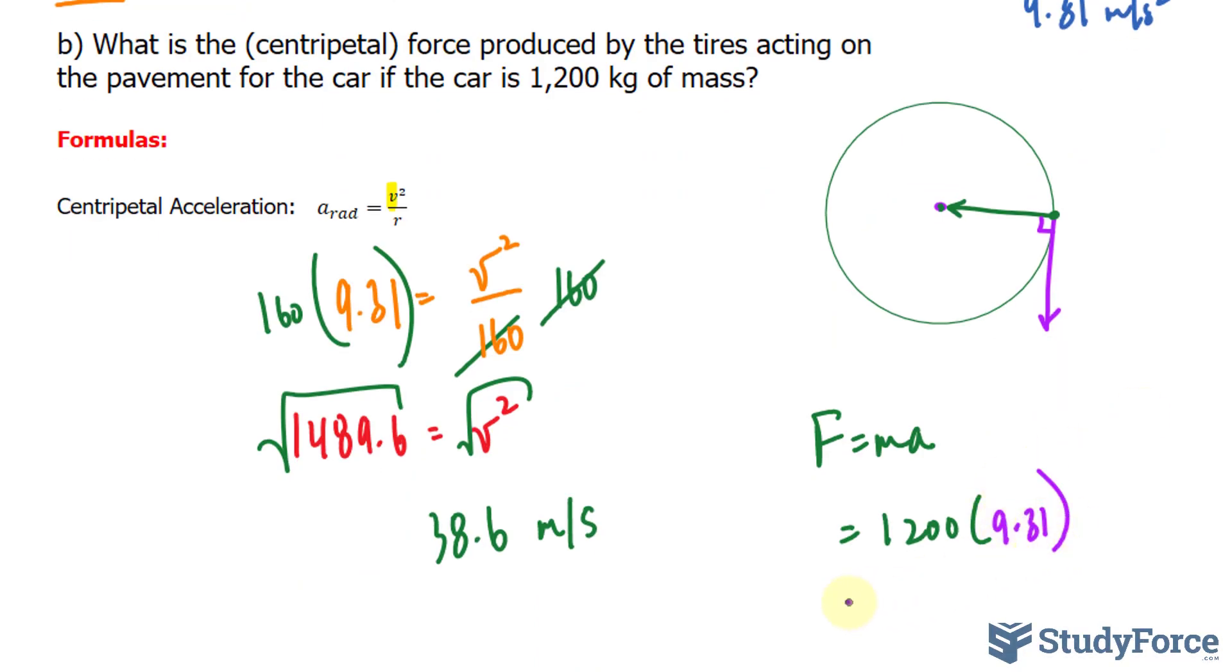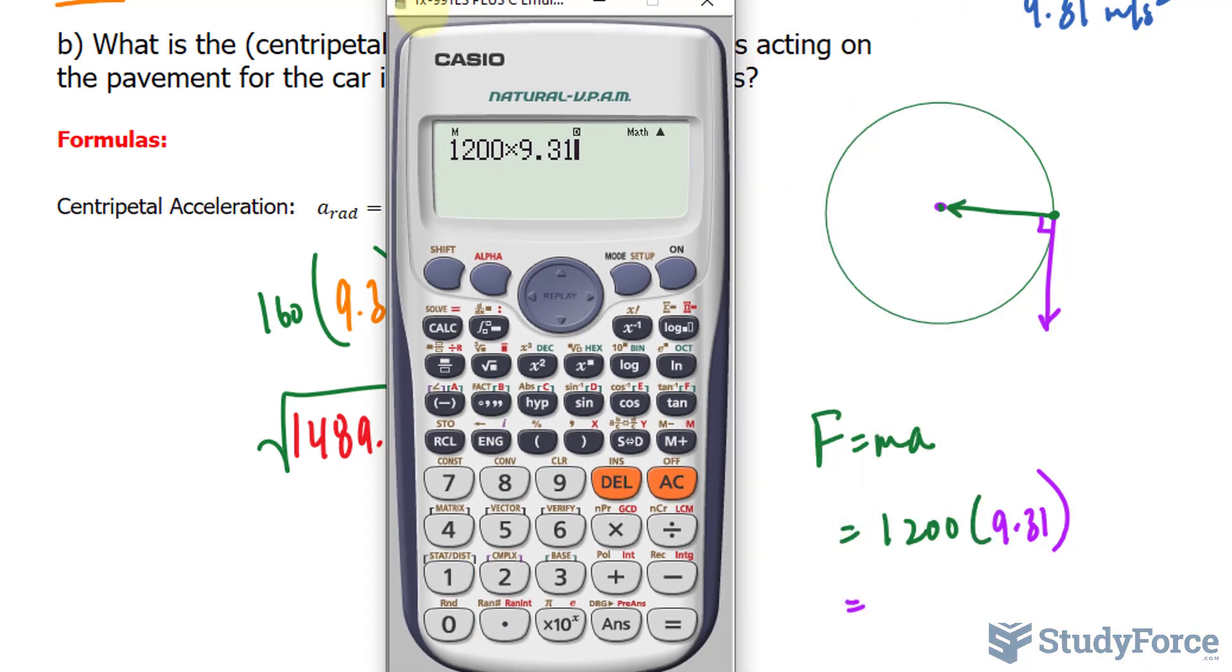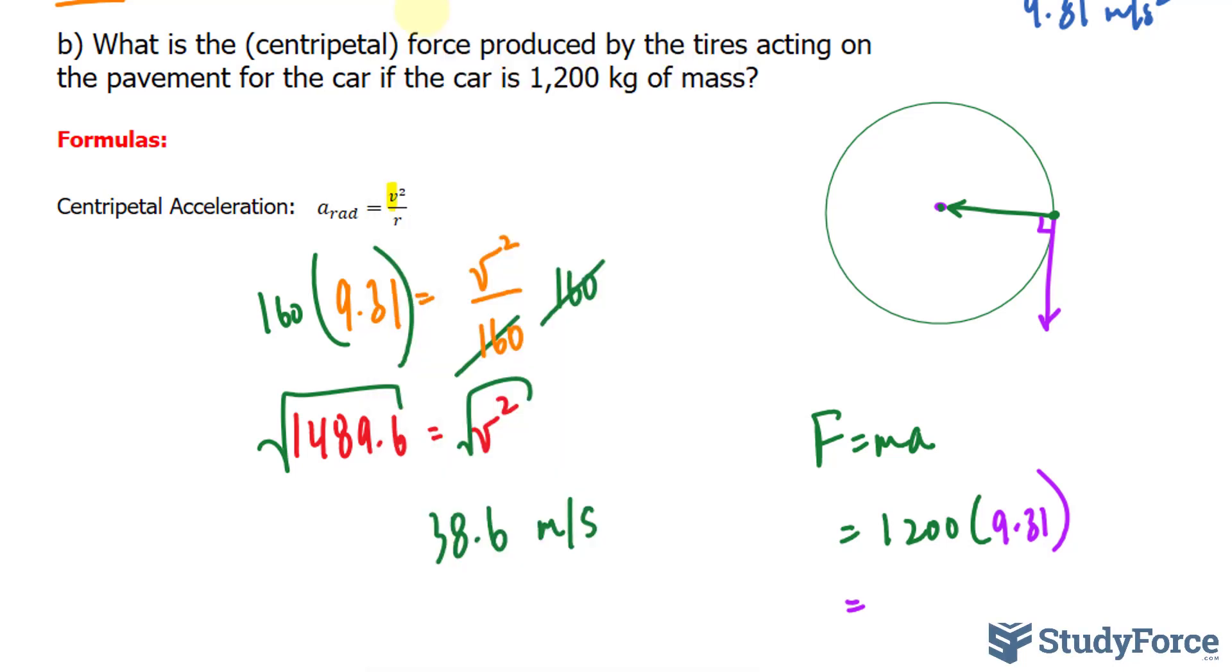So multiplying these two numbers out, 1,200 times 9.31 gives us a force of 11,172 Newtons.